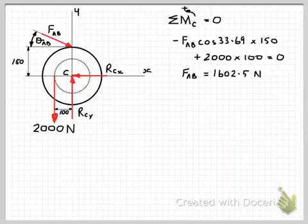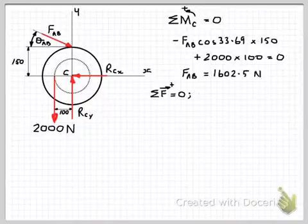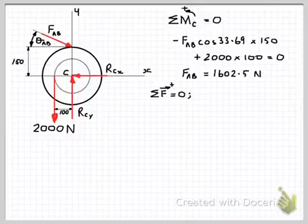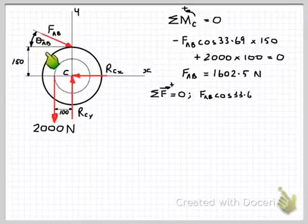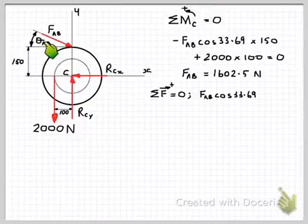Next we can start to use our force equations of equilibrium. So we'll start with sum of the forces in the horizontal direction equals zero. Noting that to the right is positive. So we can start writing in our forces. So we'll have again the horizontal component of the force AB. So FAB cos of angle theta AB.